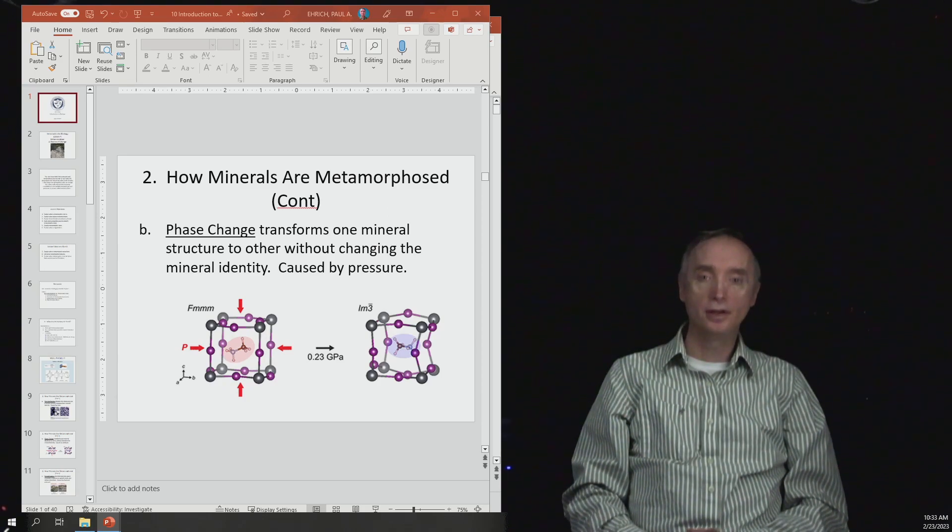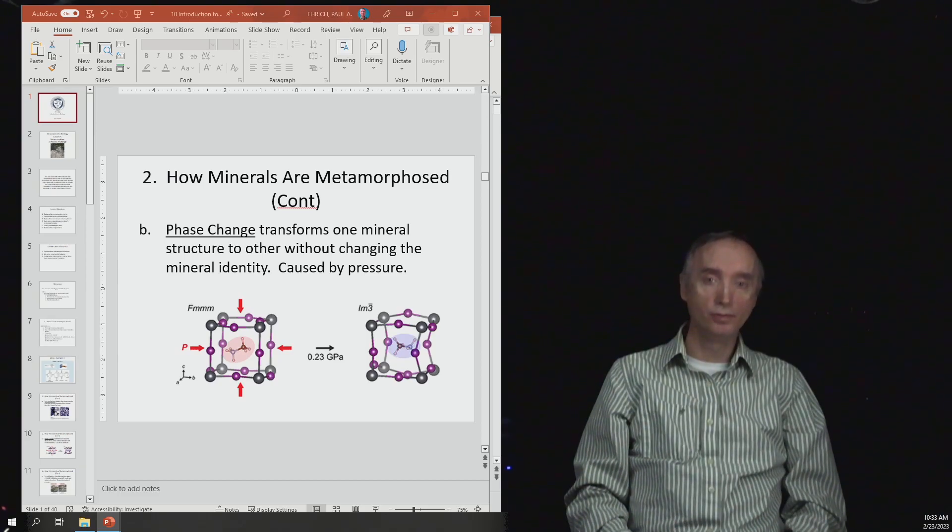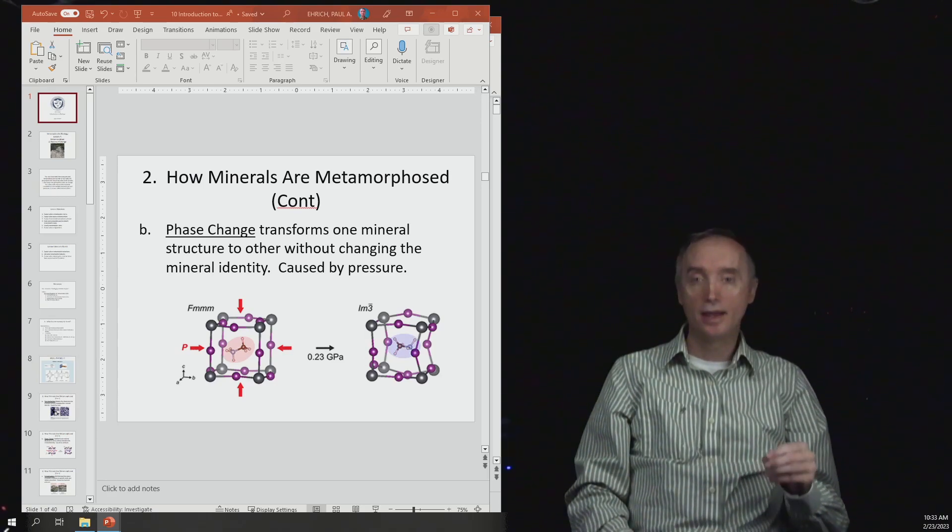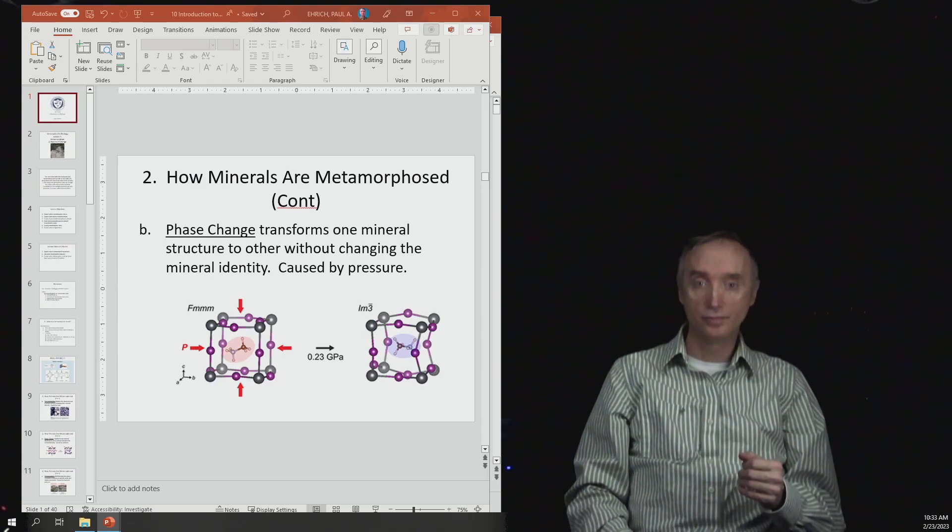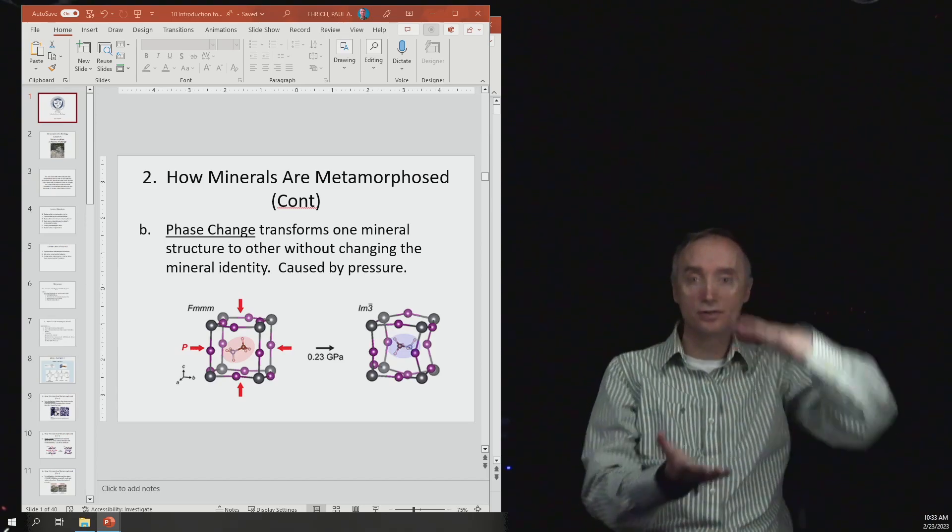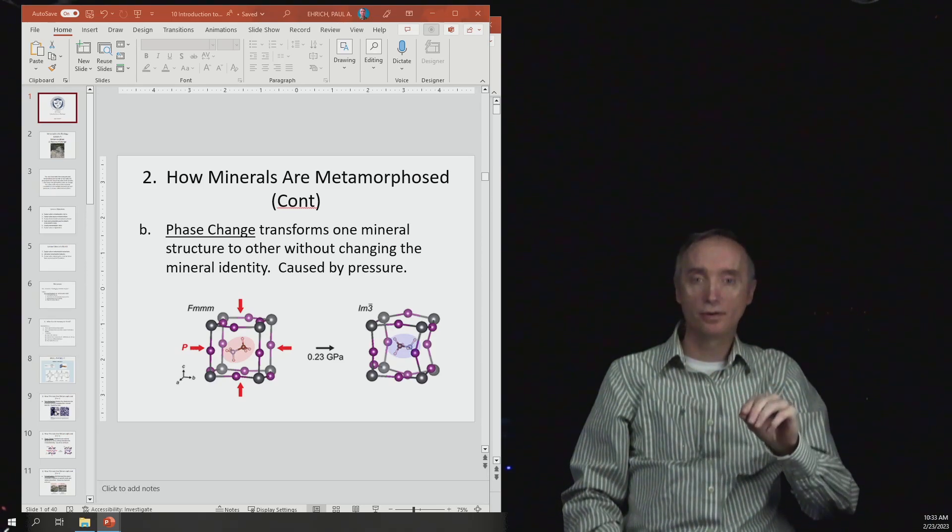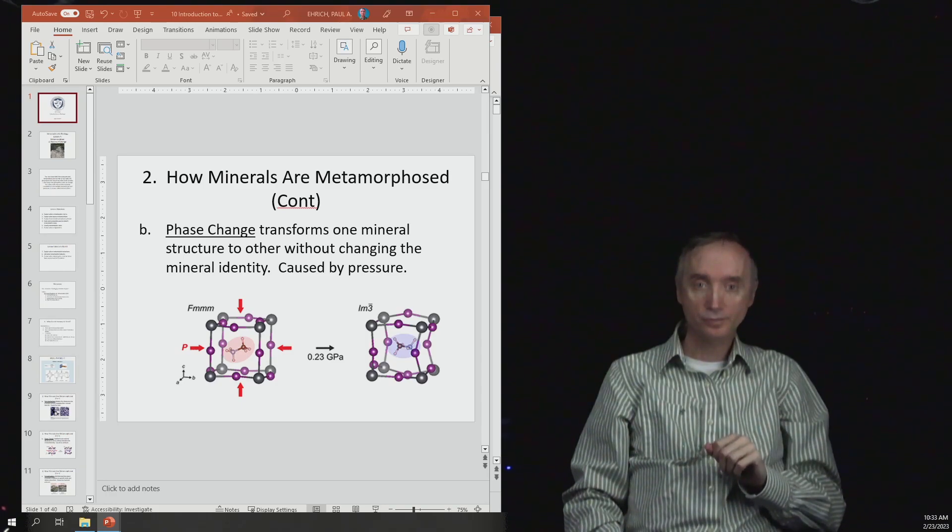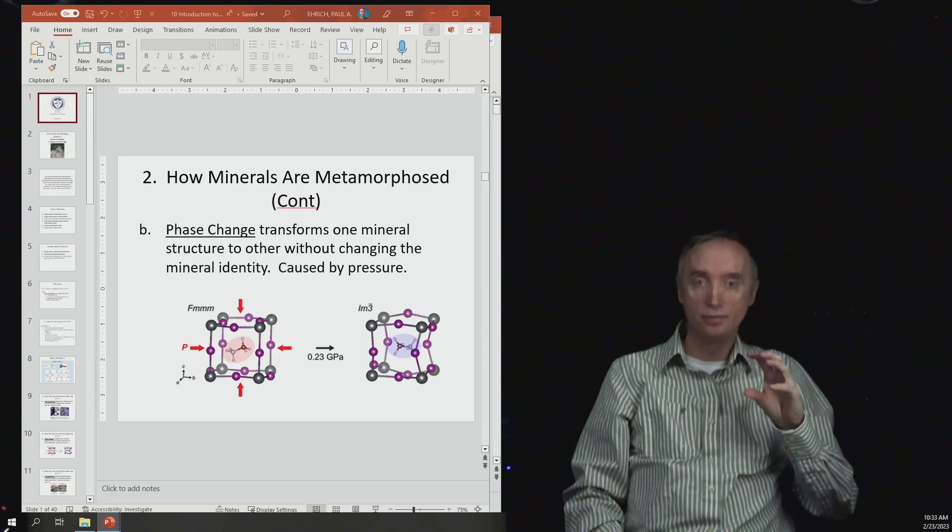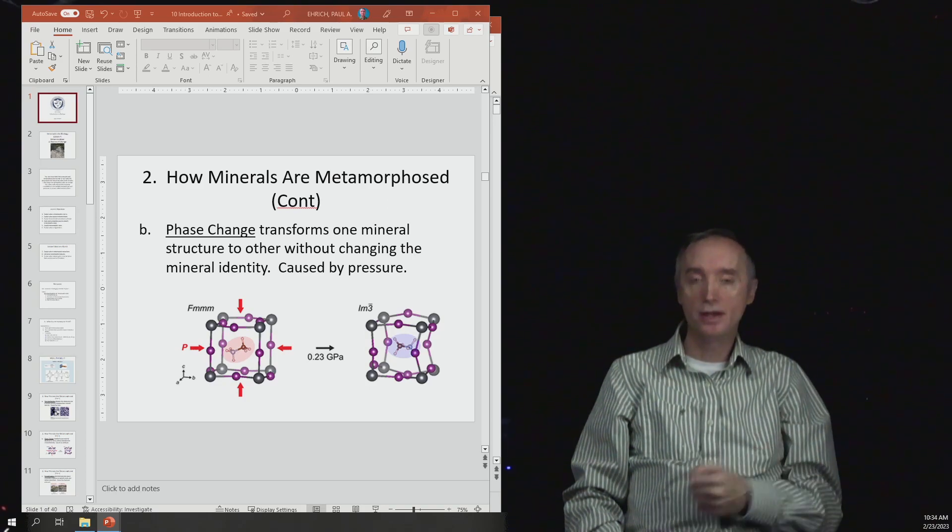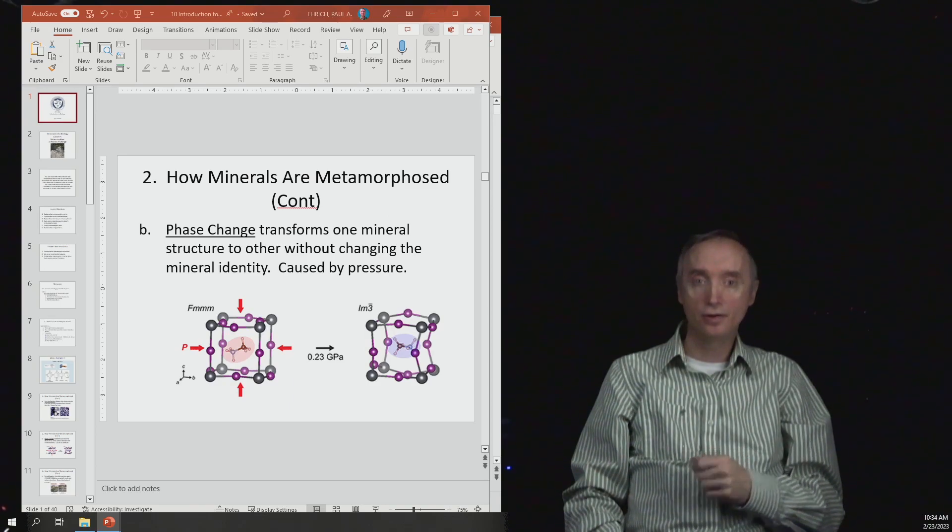For example, here is a mineral and you see it's made of different kinds of atoms that are hooked together into a cube. Then we're going to subject it to pressure and you see how the mineral has buckled. The atoms have reoriented themselves so that it strengthens the mineral to be able to withstand those increased pressures.